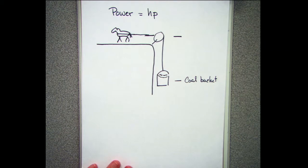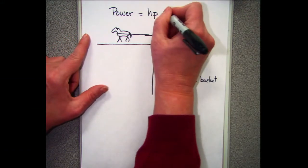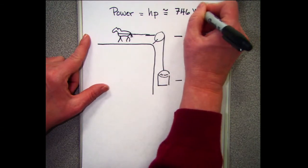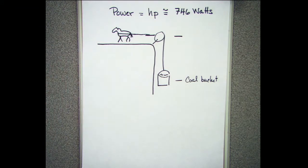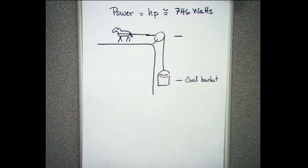Horsepower is based on a draft pony, not a horse. One horsepower is equal to about 746 watts — that's the amount of work that pony can do over a working day. They compared how much a steam engine could do versus the pony, and that's where this unit comes from. Watts are SI units; horsepower is British.